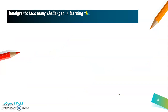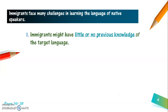Immigrants face many challenges in learning the language of native speakers. To begin with, immigrants might have little or no previous knowledge of the target language. For example, an adult person might have to immigrate at the age of 30, 40, 50 or even 60. They travel to a country where they can barely speak or understand the language, and here they face several difficulties in order to interact with native speakers.